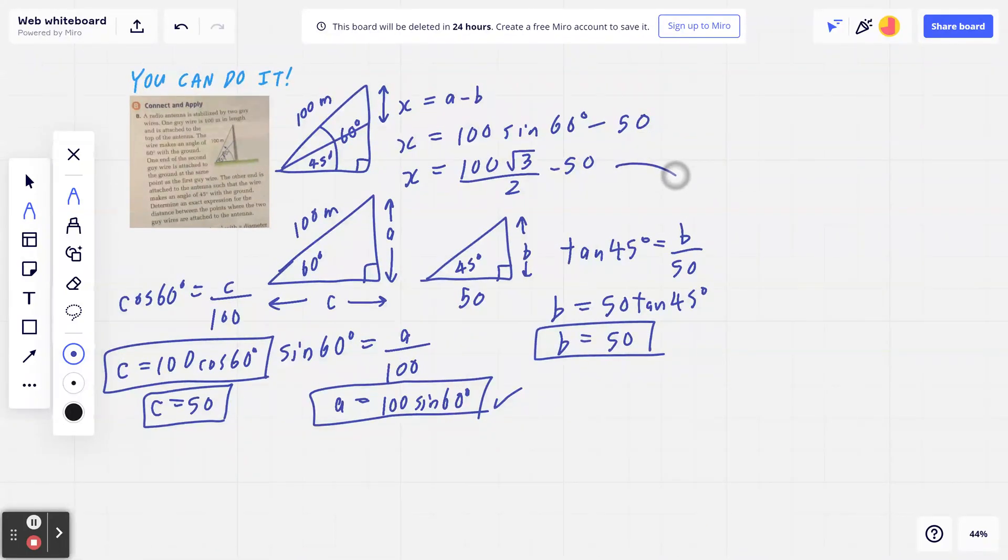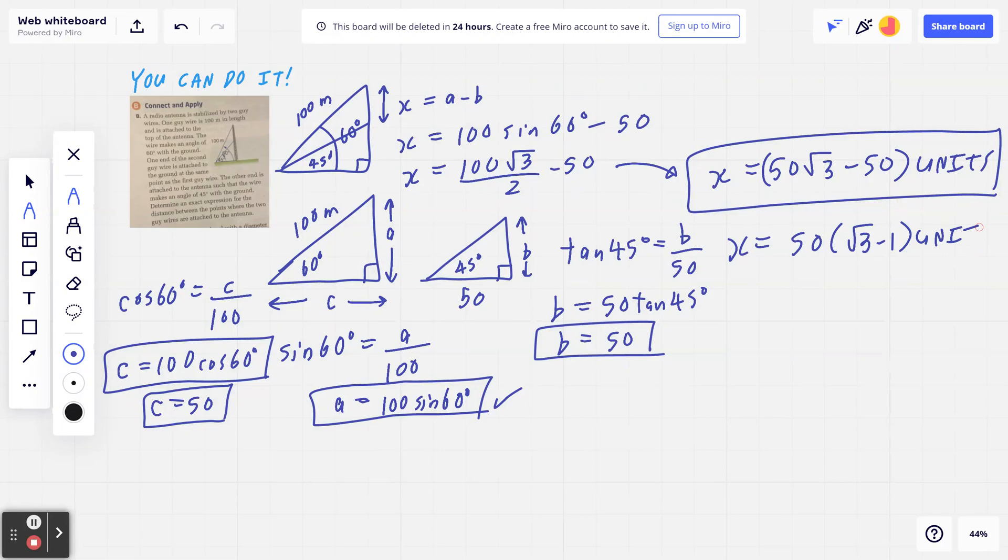So now if you express this in exact form, this equals to, I'll draw a little arrow here. x is going to be 50 root 3 minus 50. And I'll put this in brackets and write down the word units. You can leave it in this form. Sometimes you can also leave it in the factor form. If you want to factor the 50 to the front and make it root 3 minus 1, that is equally mathematically right, just like that.